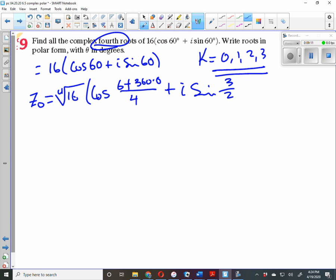Simplified, you're just going to end up with 2 cosine 15° plus i sine 15°. That was 60, not 6. So that should have been 15. Notice they said leave it in polar form. So that's our first one.